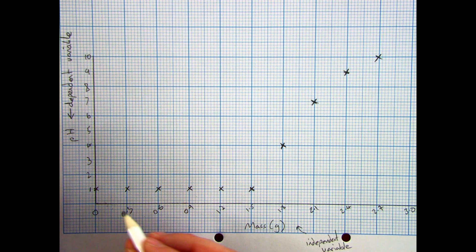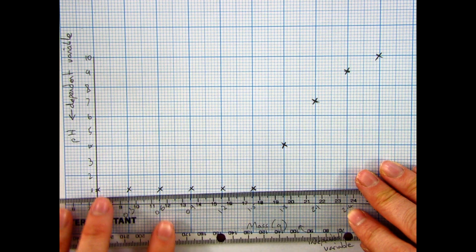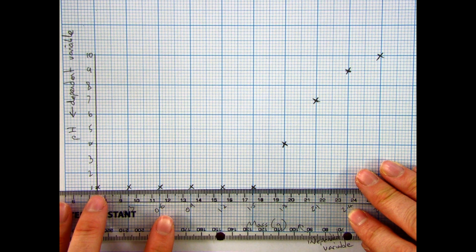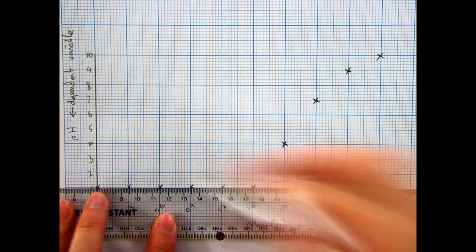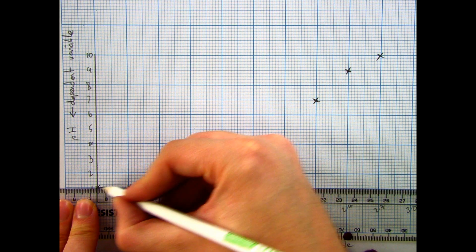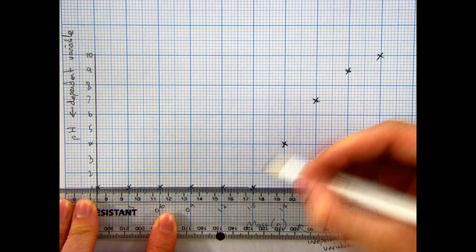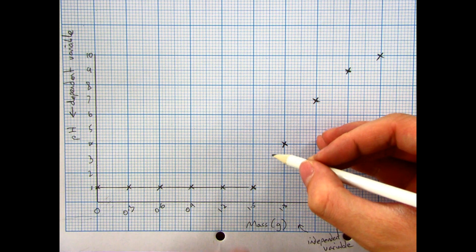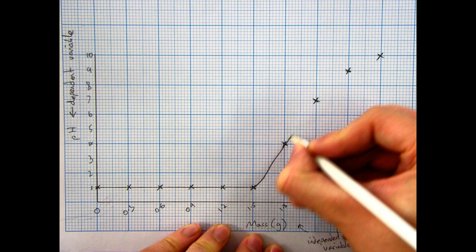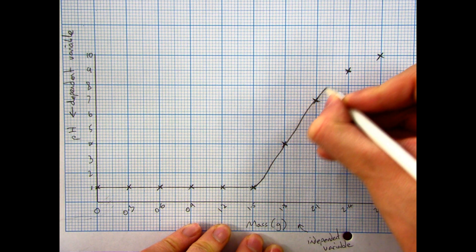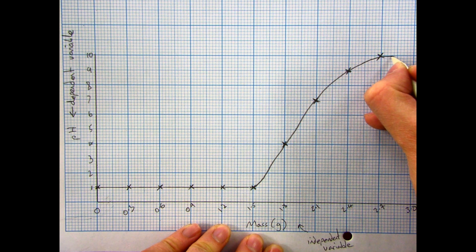All that's left now is to put my line of best fit in, which in this case is a curved line of best fit. Because it's flat down at the bottom, I can just use a ruler to join this up, but then once it starts to curve, I'm going to draw a nice curved line of best fit to go through all the points.